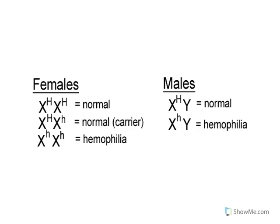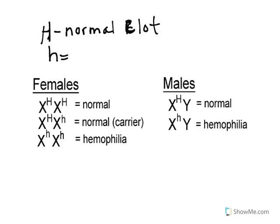Here is an example of a sex-linked trait: hemophilia. We're going to represent normal blood clotting with the capital H. People that have hemophilia are not going to be able to clot their blood properly — they are missing certain factors needed for the blood clotting process. The recessive allele is represented by lowercase H for hemophilia.